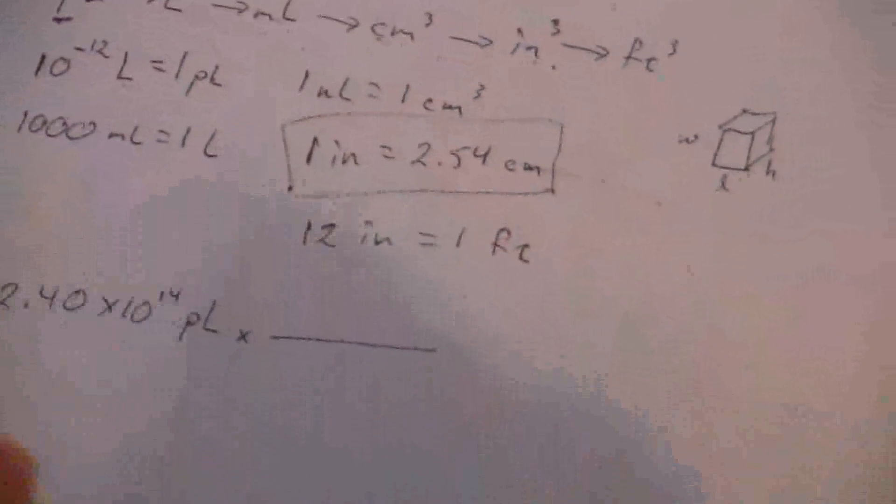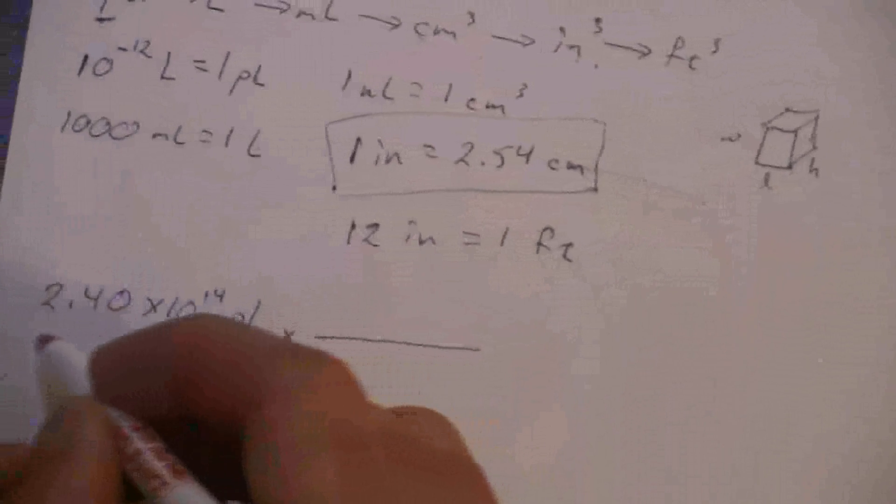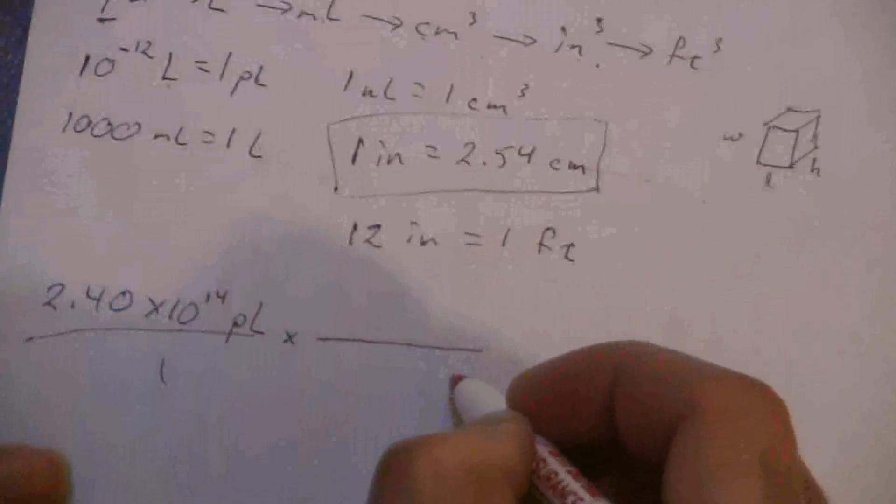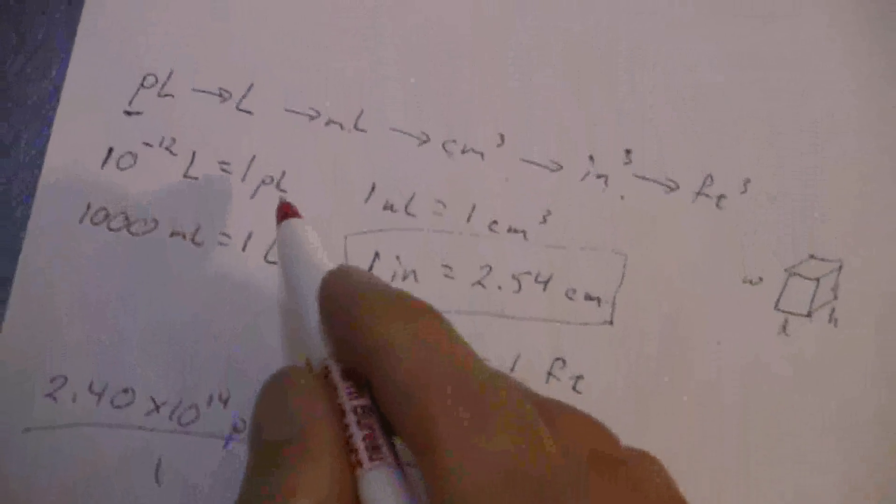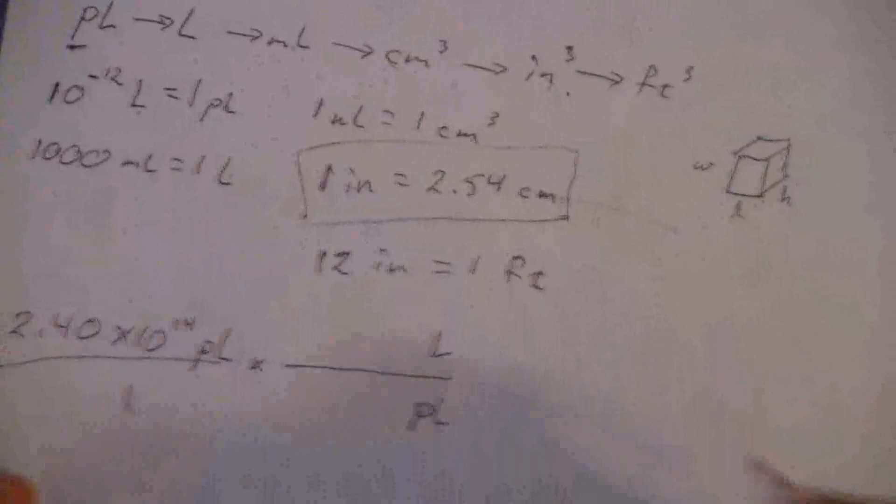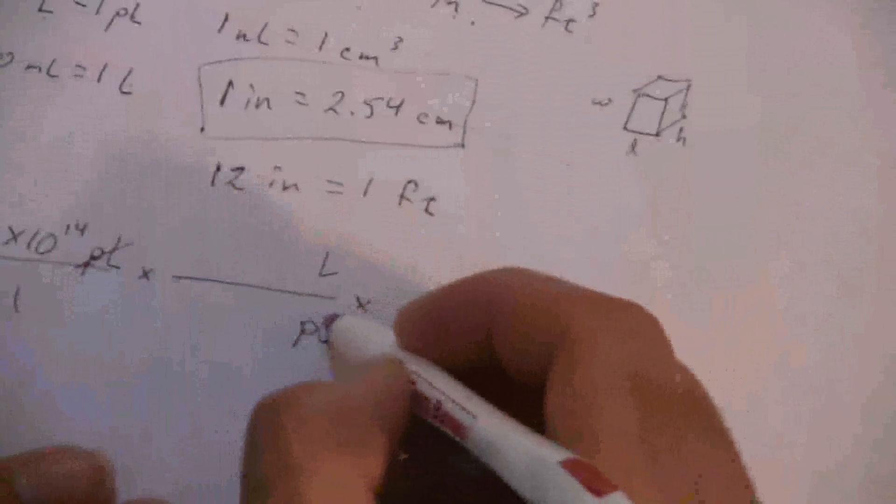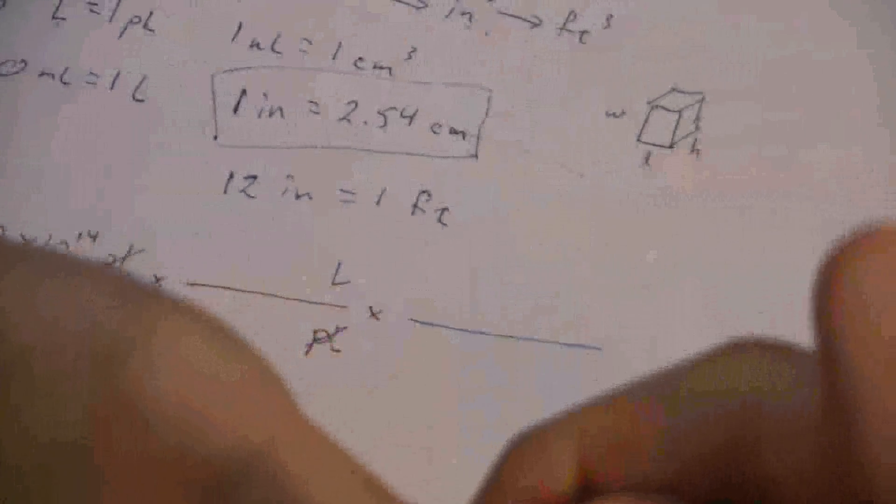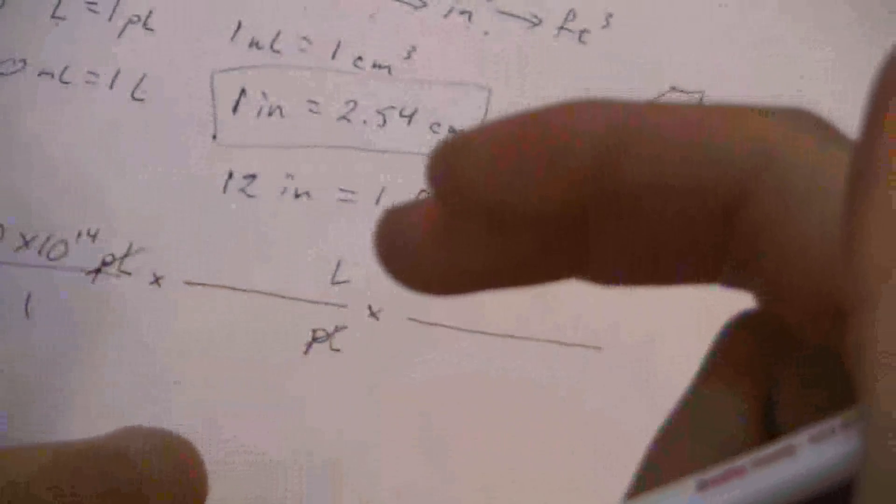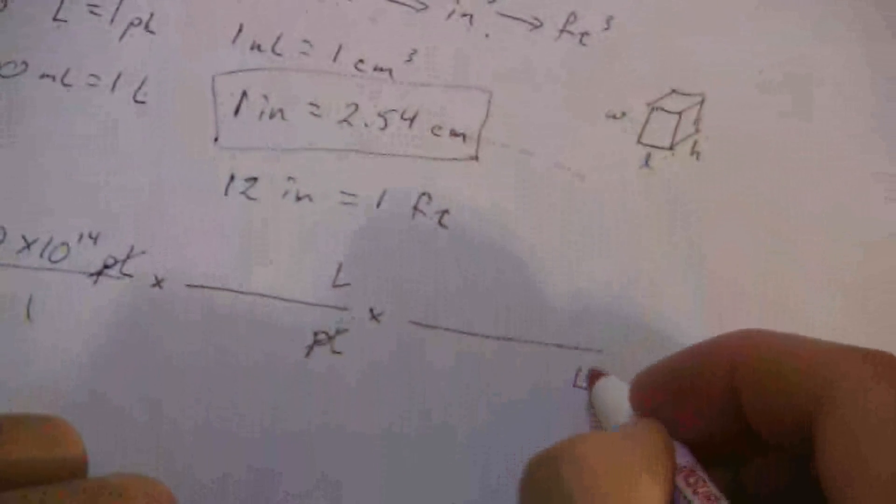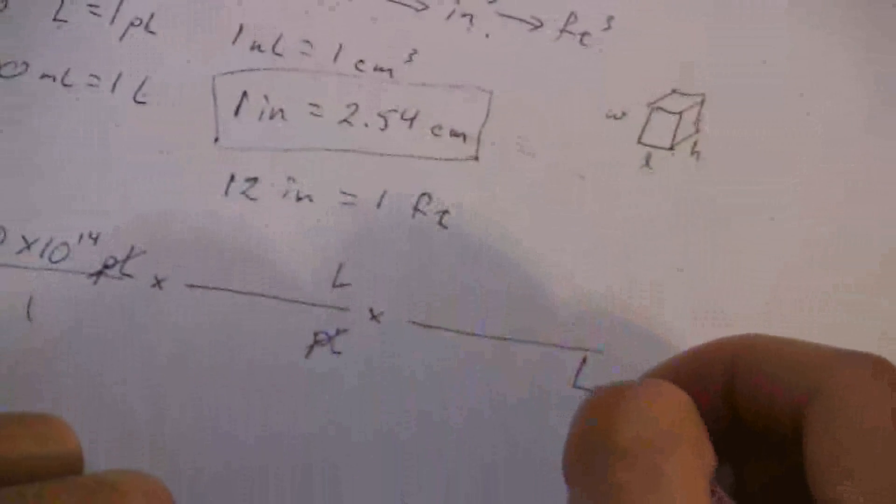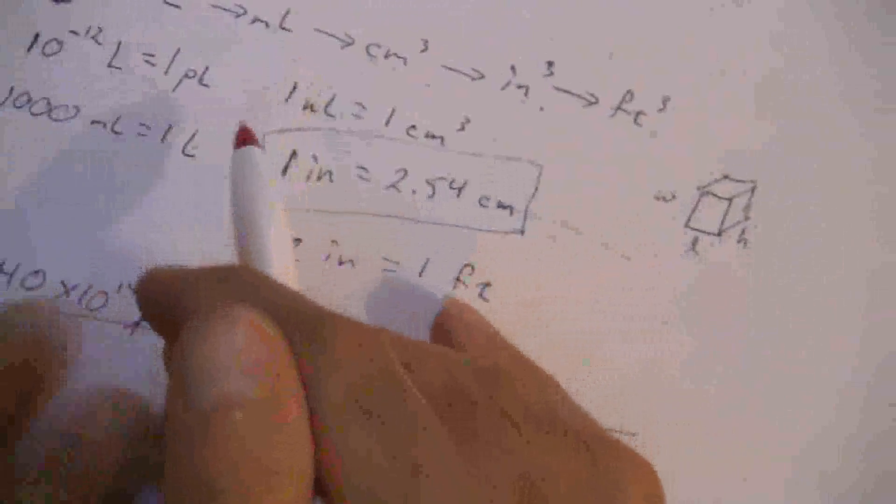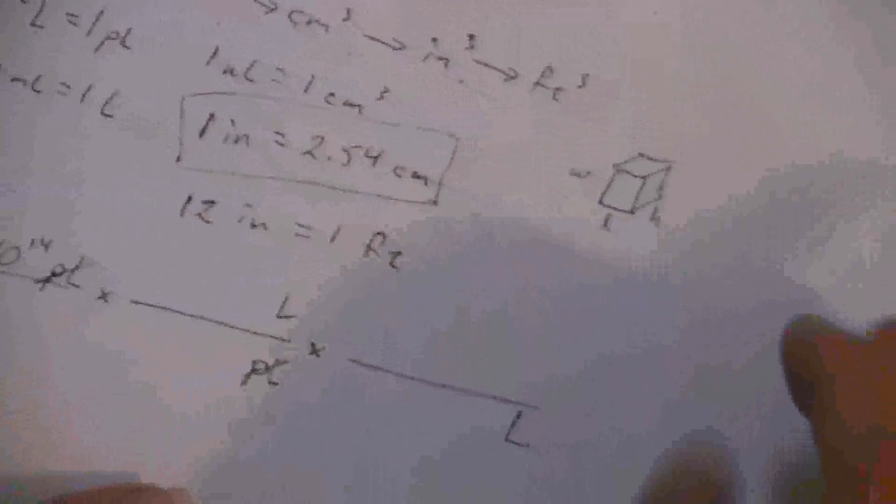What is my first coupling? I have picoliters on top, so I need the picoliters on the bottom and liters on the top. So I'm just going to put in the units here first, and then we'll go back and put in the conversion factors. Now my picoliters will have canceled, and I'll have liters. So that means in order to lock in the next train car, I have to have liters down here. Liters on top, liters on bottom. So now I'm using this one, liters to 1,000 milliliters.